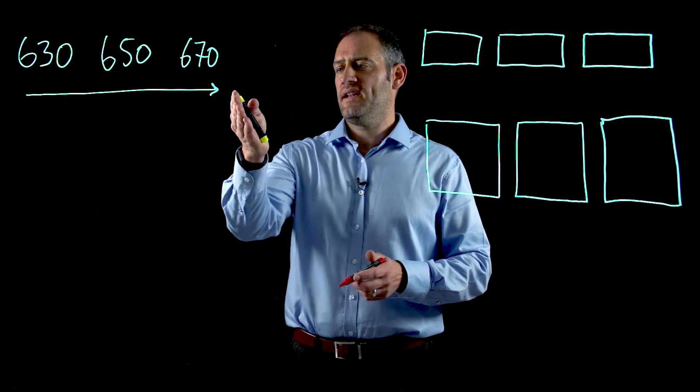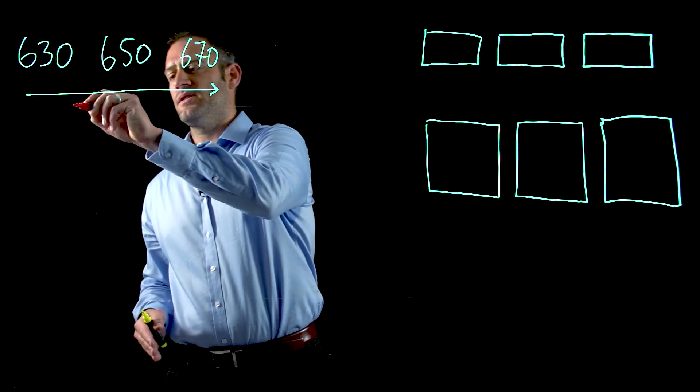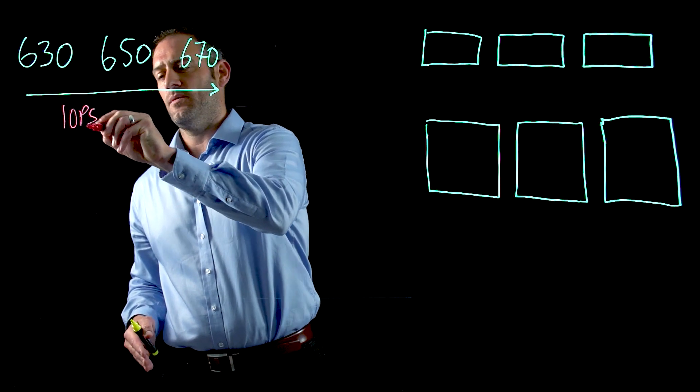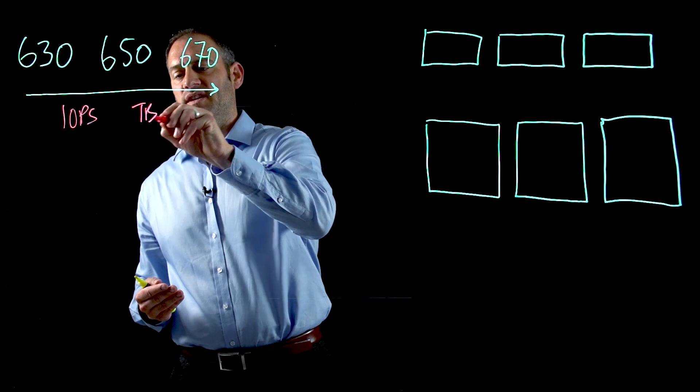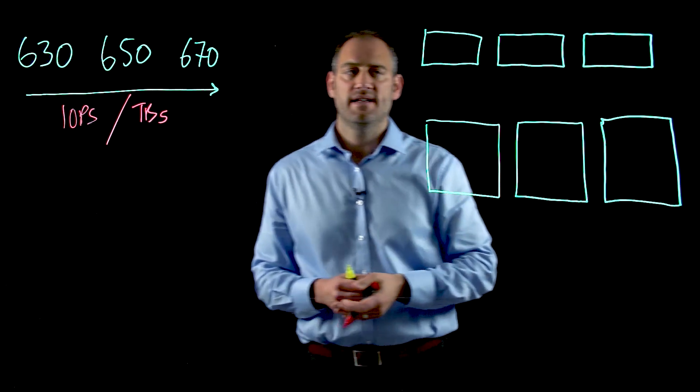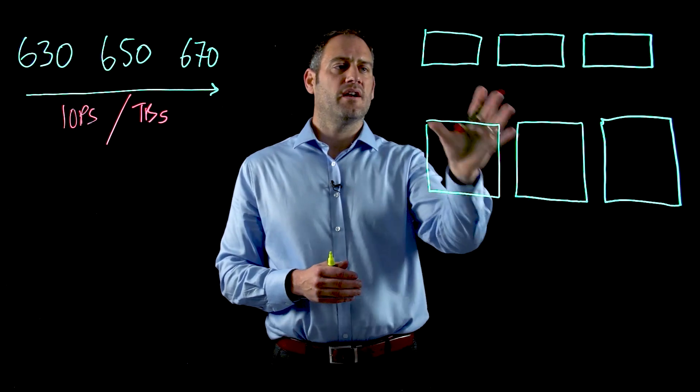We've got our model numbers over here and we can see the arrow. As we go through the models, we increase the number of IOPS from a capability point of view and also the number of terabytes that we're capable of supporting in that system.